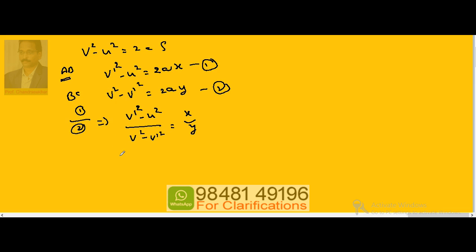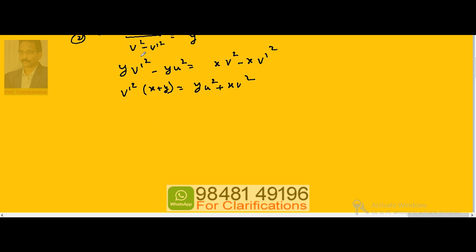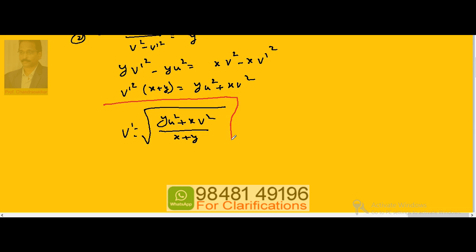Cross-multiplying: y(v'² - u²) = x(v² - v'²), which gives y·v'² - y·u² = x·v² - x·v'². Bringing v'² terms to one side: v'²(x + y) = y·u² + x·v². Therefore, v' = √((y·u² + x·v²) / (x + y)). This is the velocity at a point dividing the total distance in ratio x to y.